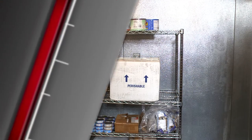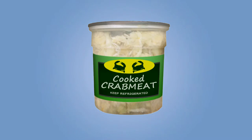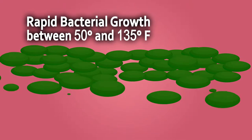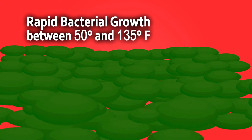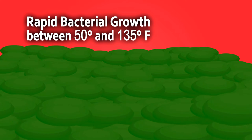Refrigeration at 40 degrees Fahrenheit or less will control the growth of most foodborne pathogens. Pathogenic growth occurs over a wide range of temperatures. In seafood products, bacterial pathogens can enter a phase of rapid growth when temperatures are between 50 and 135 degrees Fahrenheit, and the growth rate will increase as the temperature rises.